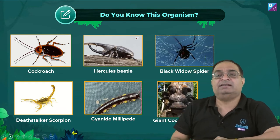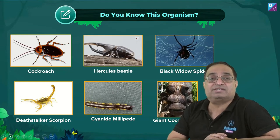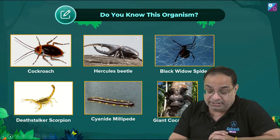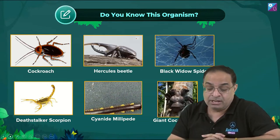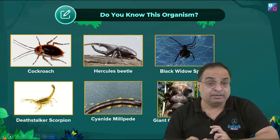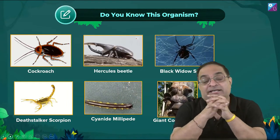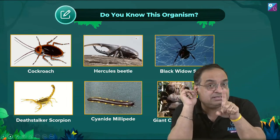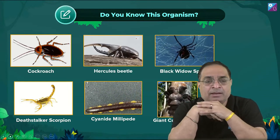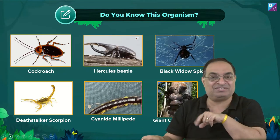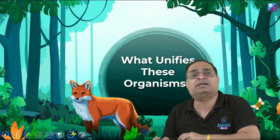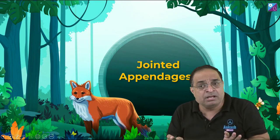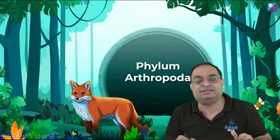The organisms you see on screen — observe them closely. You are looking at a cockroach (Periplaneta), a depth-stalker scorpion, a millipede, a giant coconut crab, and a Black Widow Spider. Arthro means jointed and poda means appendages — so Arthropoda means jointed appendages.